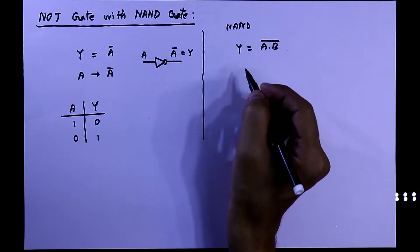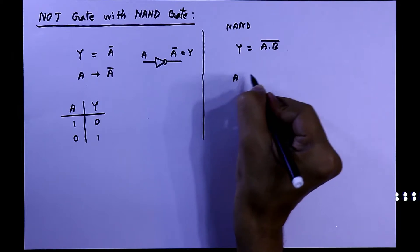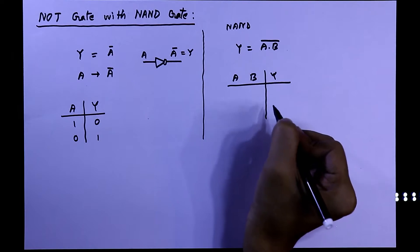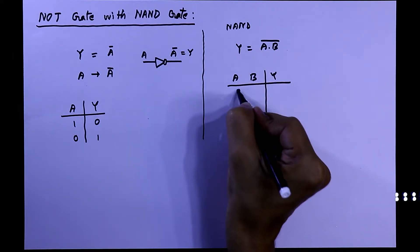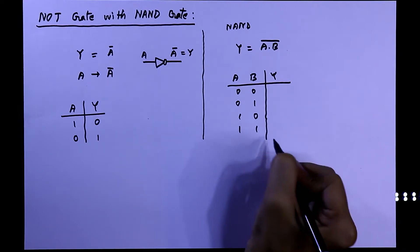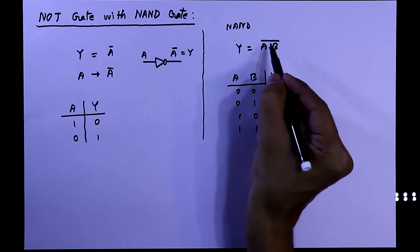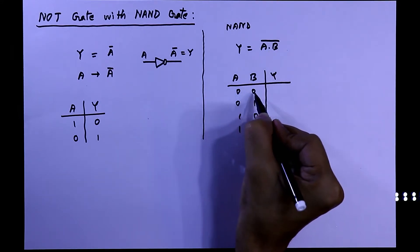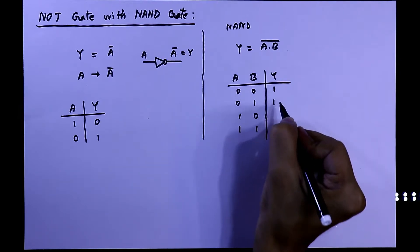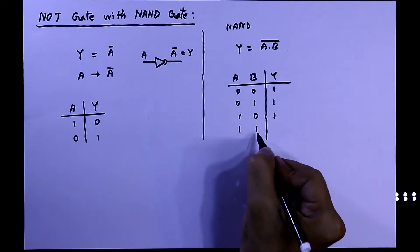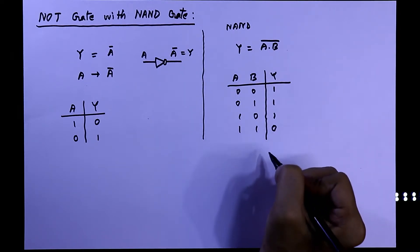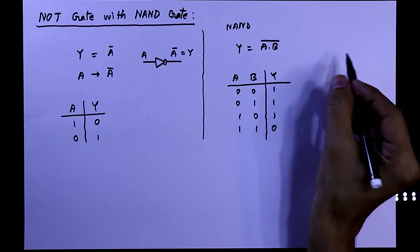Now we will see the truth table of NAND gate. A and b are the inputs and y is the output. We will have 4 possibilities: 0 0, 0 1, 1 0, and 1 1. The output, a dot b bar: 0 dot 0 equals 0, and its bar equals 1. Here also we get 1, 1, but 1 dot 1 equals 1 and 1 bar equals 0. And the symbol of NAND gate is the two-input NAND gate.